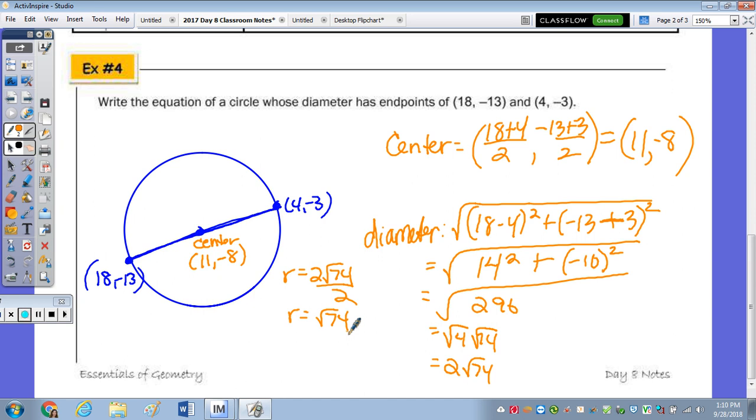So our radius is going to be 2 radical 74 over 2, which is just the square root of 74. Now I'm running out of room. So I'm going to write the equation up here. Because our direction said to write the equation. So we know our center. Plug that in. So x minus 11 squared plus y plus 8 squared equals, Thomas? 74. Yeah. Whenever you square, so to find the r squared in the equation, once we square this, they're inverse operations. So 74 is right.